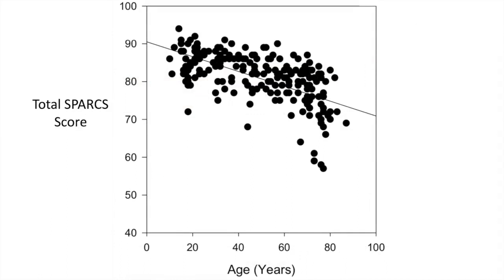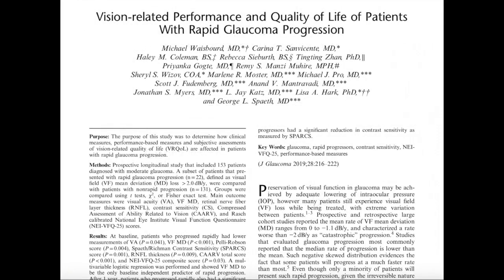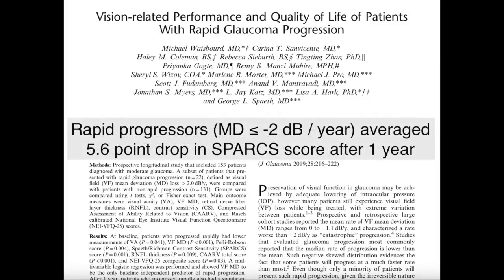Like many other visual tests, SPARCS scores are influenced by age as scores tend to decline with older age. This figure shows a scatterplot of the total SPARCS scores and controls in our normative database study. The repeatability of the total SPARCS score when subjects took the test twice in the same day was about plus or minus 10. This means that if a subsequent total score is more than 10 points different from a prior test, there is a 95% likelihood that the change in the score is real. This does not mean that a real change cannot occur if the change is less than the test-retest repeatability. For example, in a prospective longitudinal study involving SPARCS, a decrease in the total SPARCS score by 5.6 points after one year was predictive of rapid glaucoma progression.